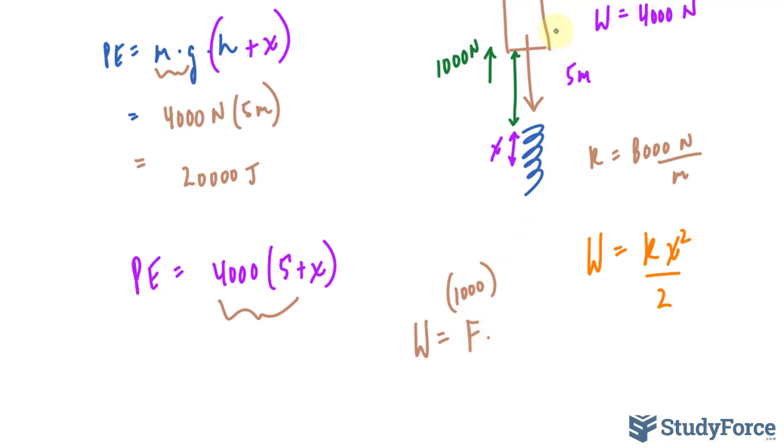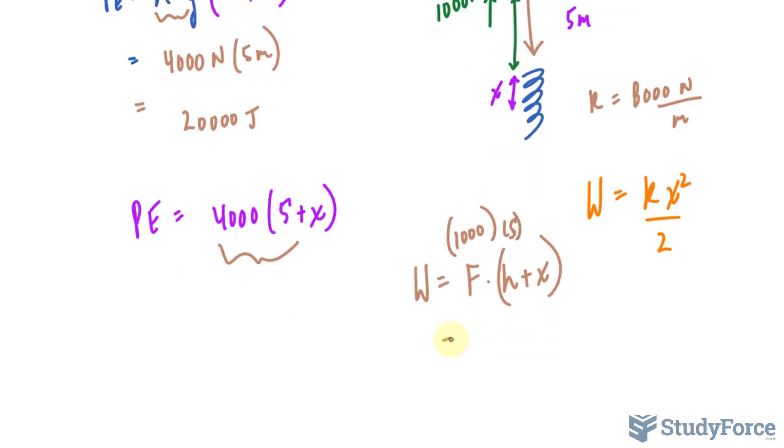times the height of h, which is 5, I'll replace that with 5 in a moment, plus x. Remember work is calculated using force times displacement, and that's exactly what this expression is doing for us. We have 1,000(5 + x).